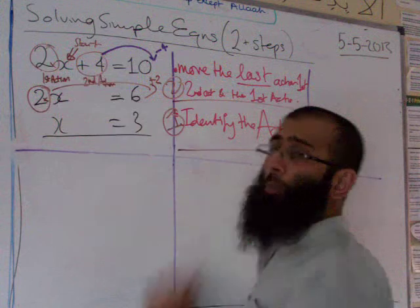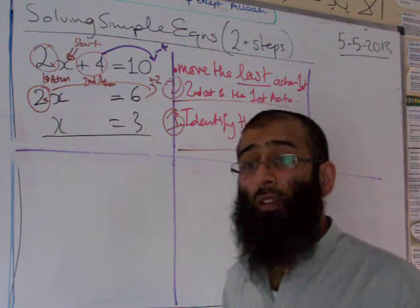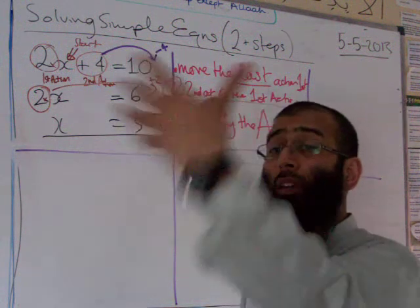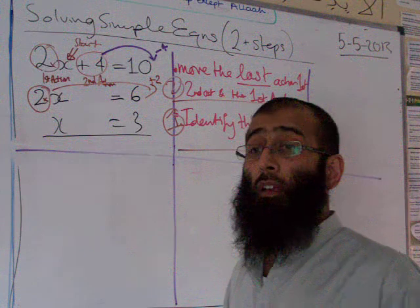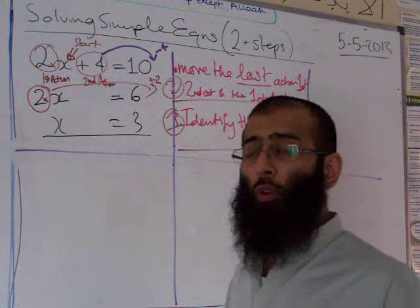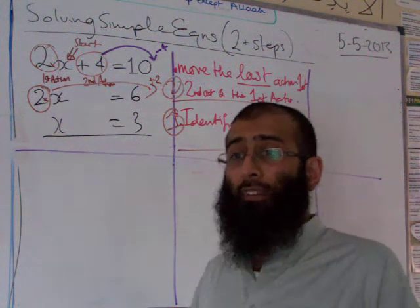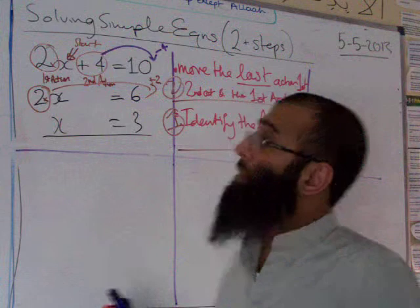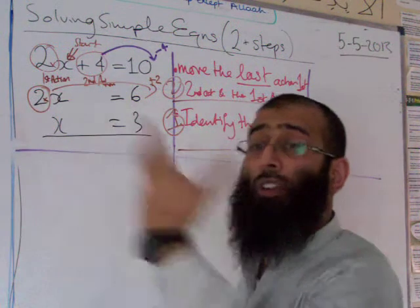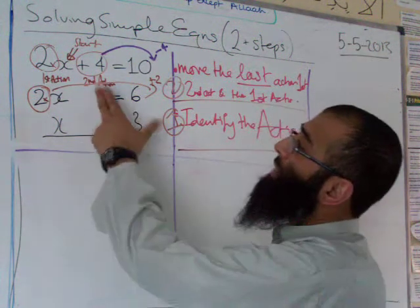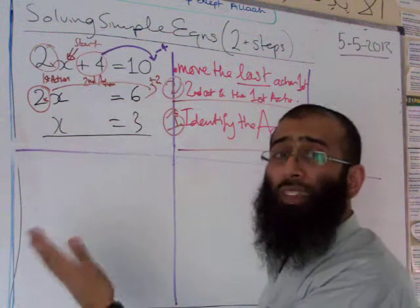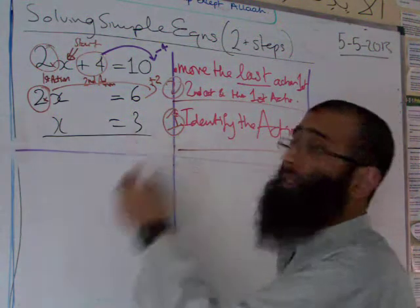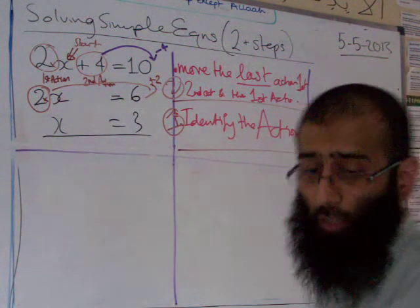A two-step question is not harder than a one-step question — it's just longer. Like toast in the morning: one toast is easy, two toasts just takes twice as long. This question is not harder, it is longer. Identify first and second actions, move in reverse order, and you're done.